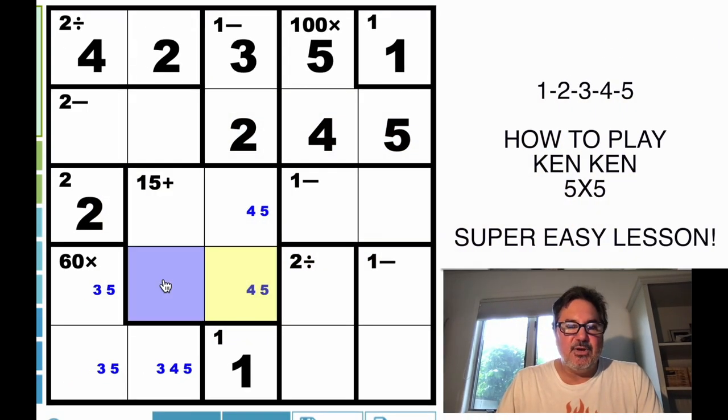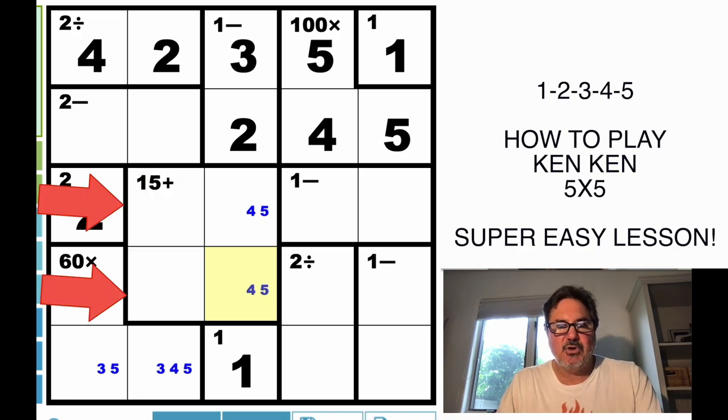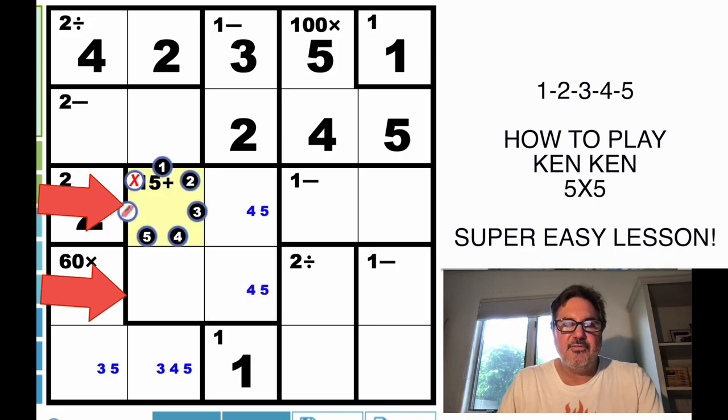And because we can't have a 3 and a 3, because that would have two 3s in the same column, but we can't have a 2 here either. So it can't be a 4 and a 2. So therefore the only two digits that can go here are a 1 and a 5. So I'm going to go ahead and in this one put the 1 and the 5, and in this one put the 1 and the 5.